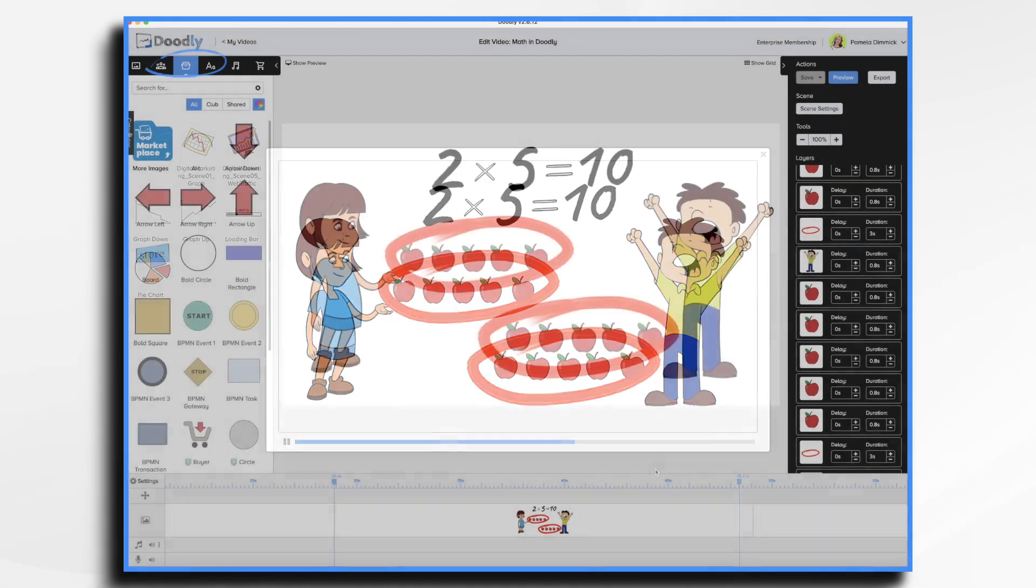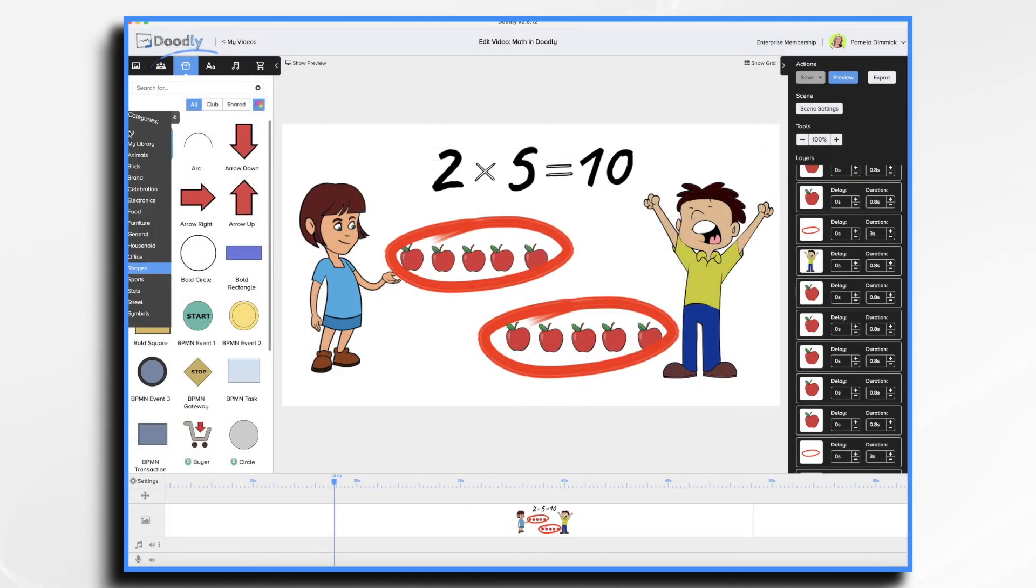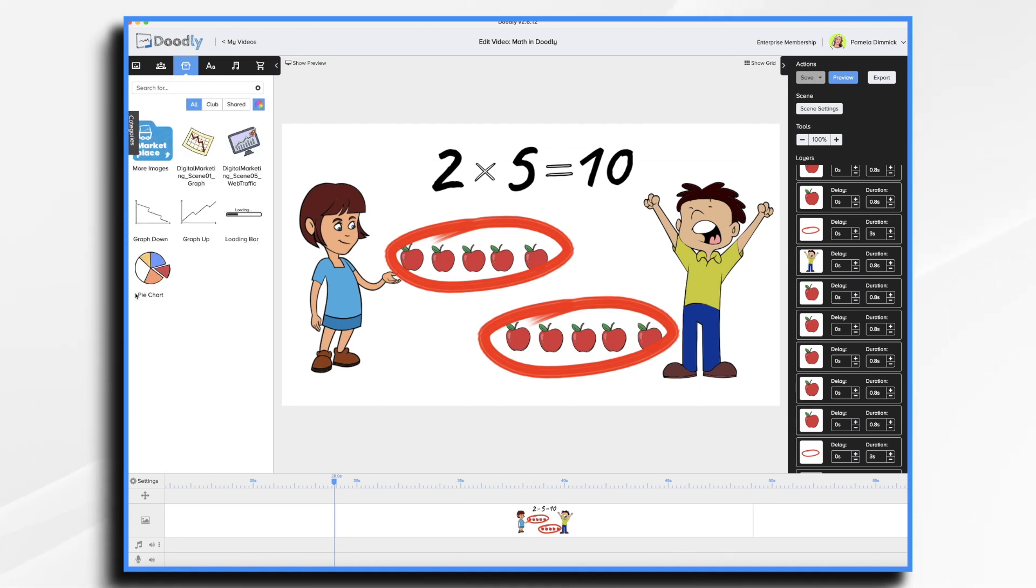Likewise, you can find shapes by clicking props, categories, and shapes. You might also find a few more helpful graphics under stats and symbols.